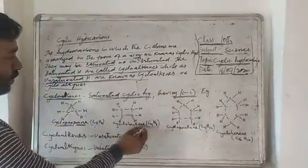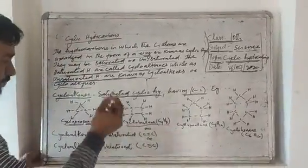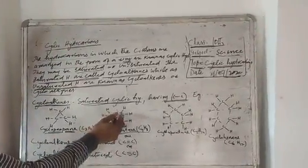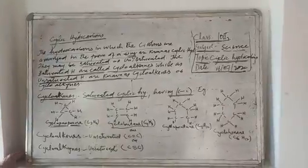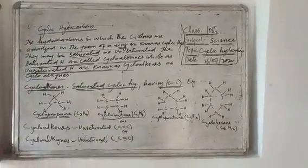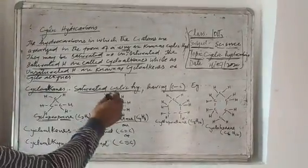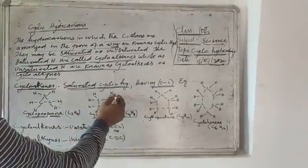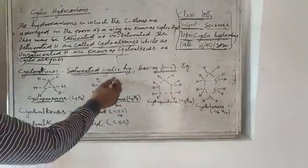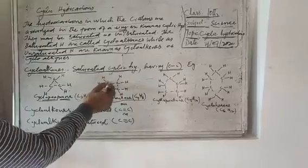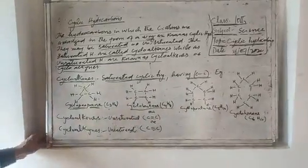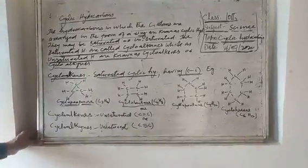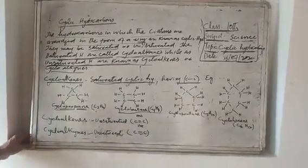Cyclobutane C4H8 also forms a ring structure. Four carbon atoms are linked with one another by single bonds in such a way that they form a ring structure, and each carbon atom is linked with two hydrogen atoms, making this structure known as cyclobutane C4H8.